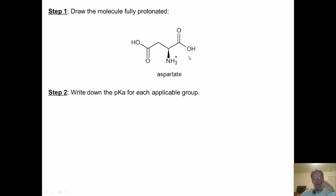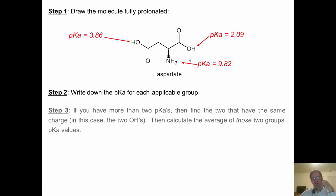Step 2, write down the pKa for each applicable group. What are those pKa values? Here they are. Step 3, if you have more than two pKa values, and we do in this case, then find the two that have the same charge as each other. So I've got these two neutral OHs, same charge as each other. This NH3 plus is the odd man out. The OHs are the ones I'm going to go with. Then all we do is calculate the average of those two pKa values.